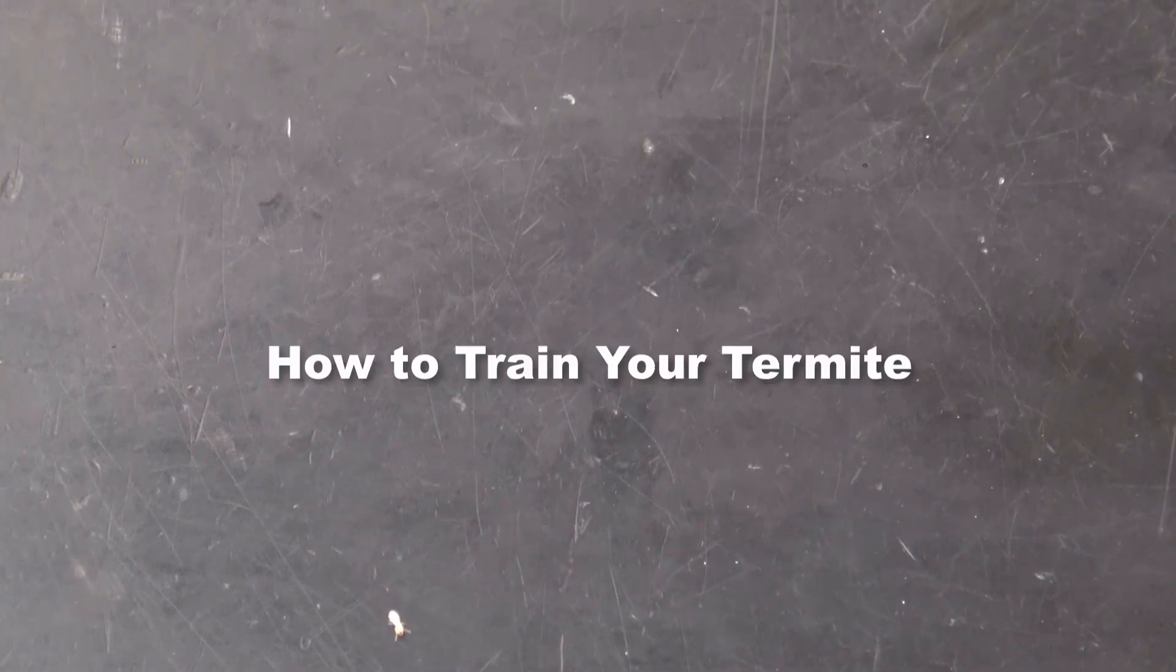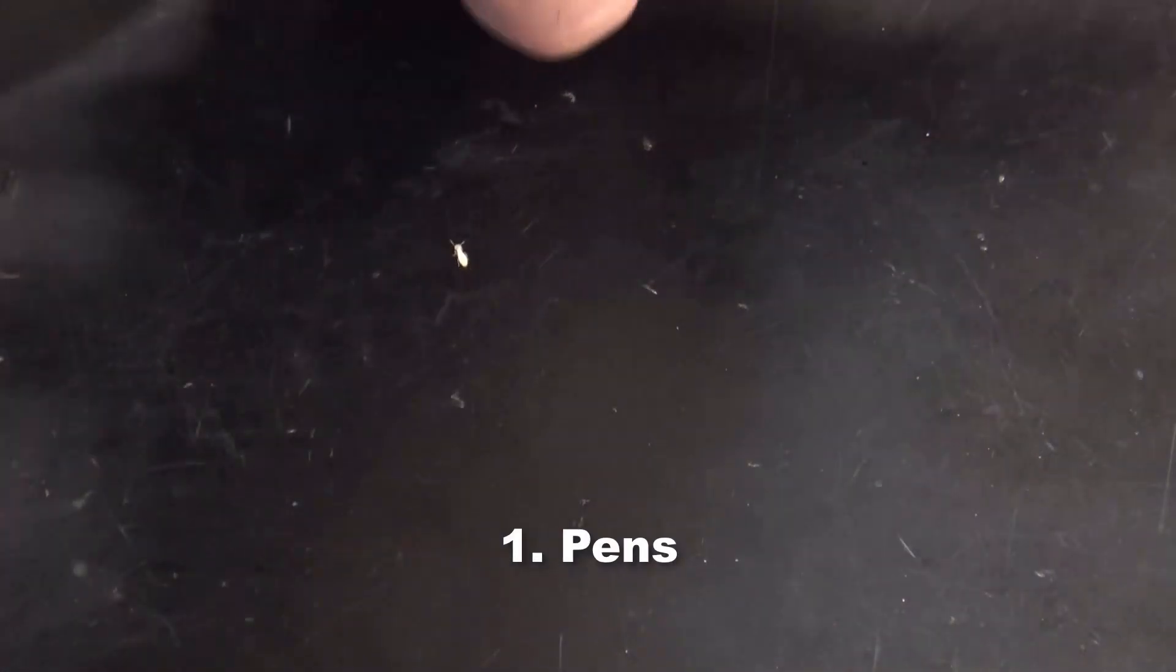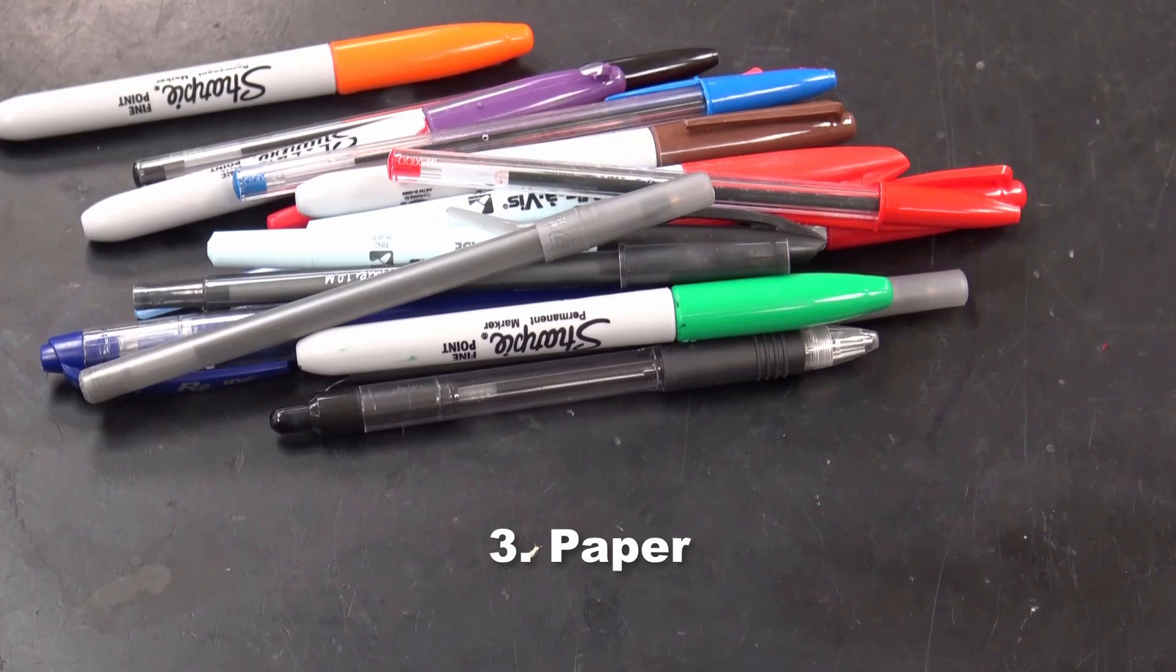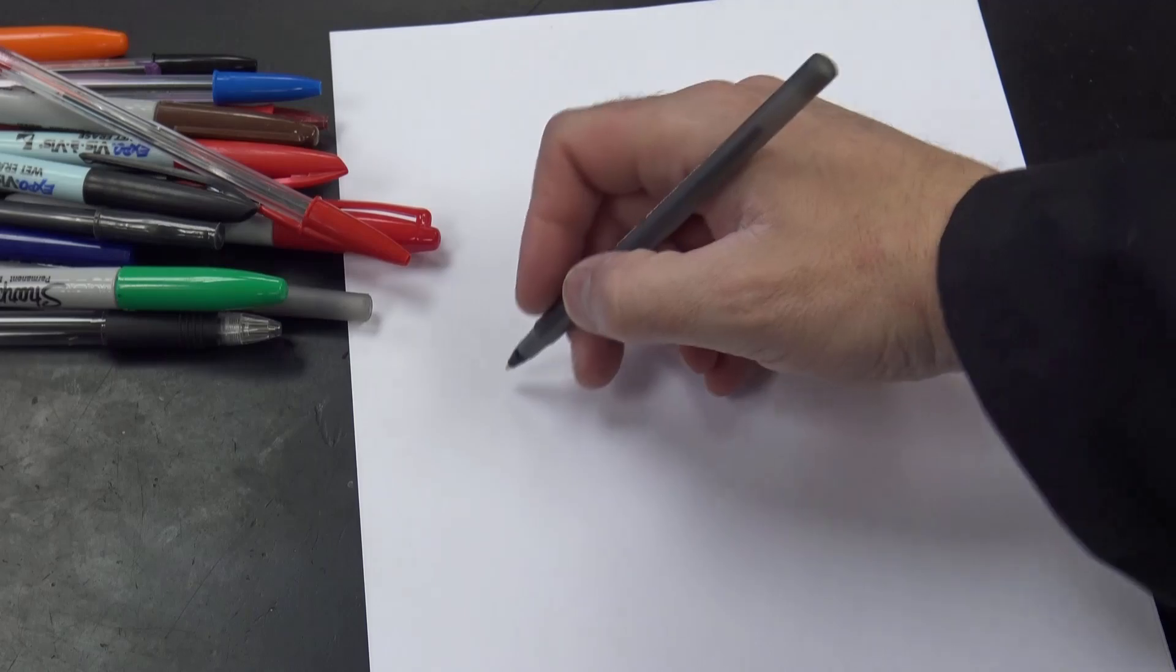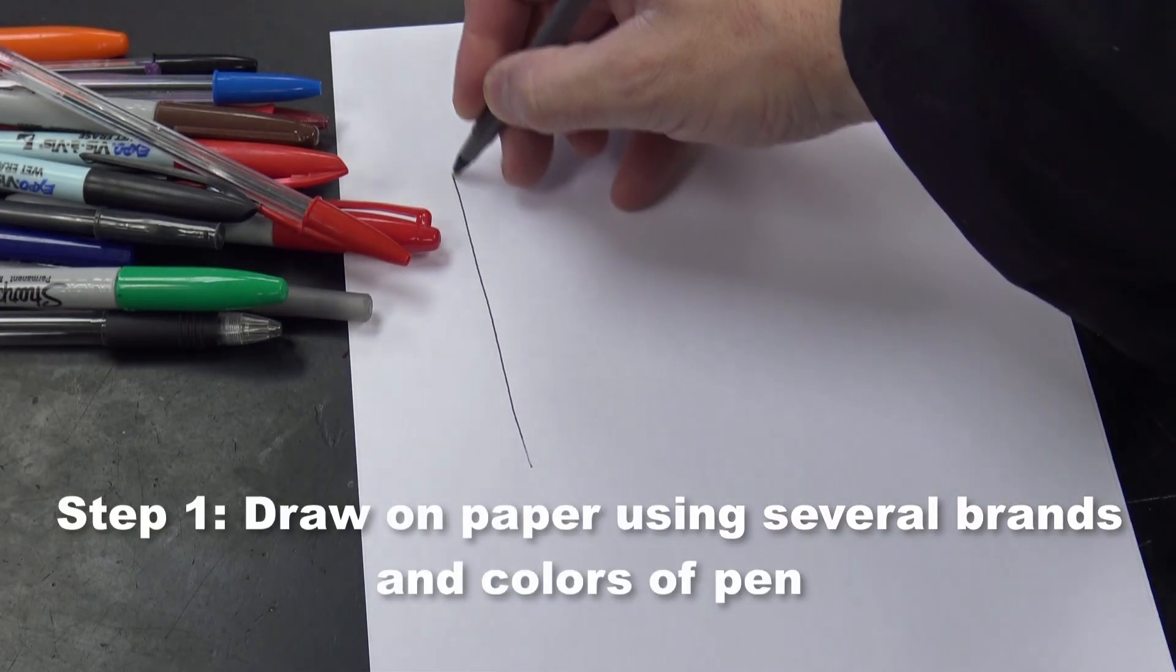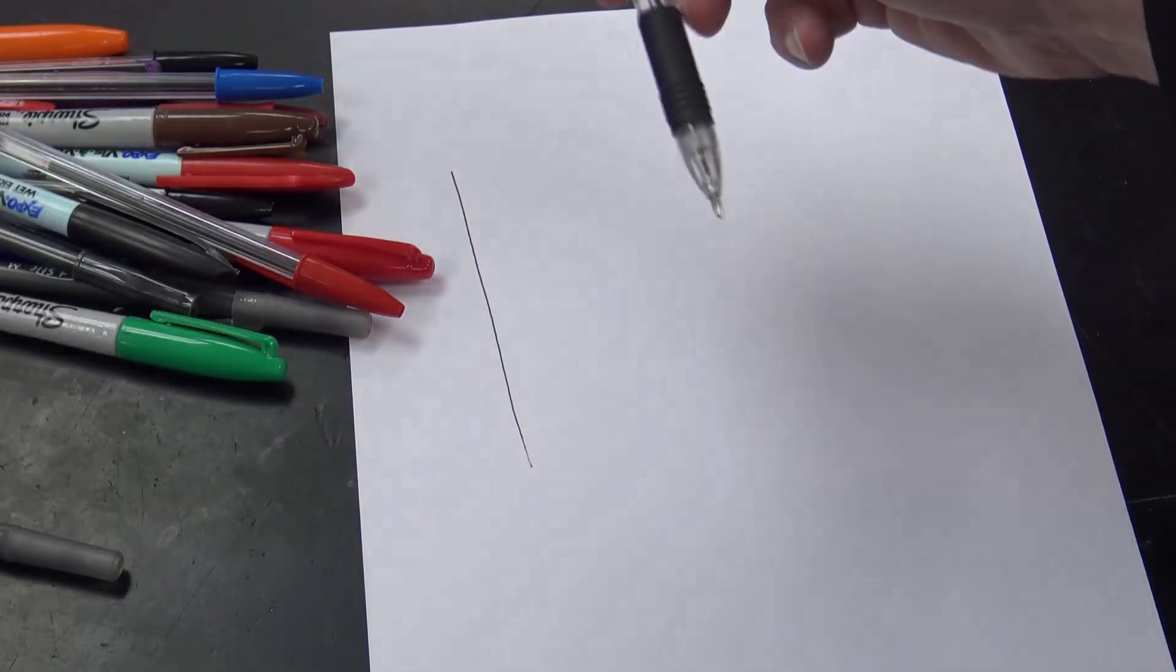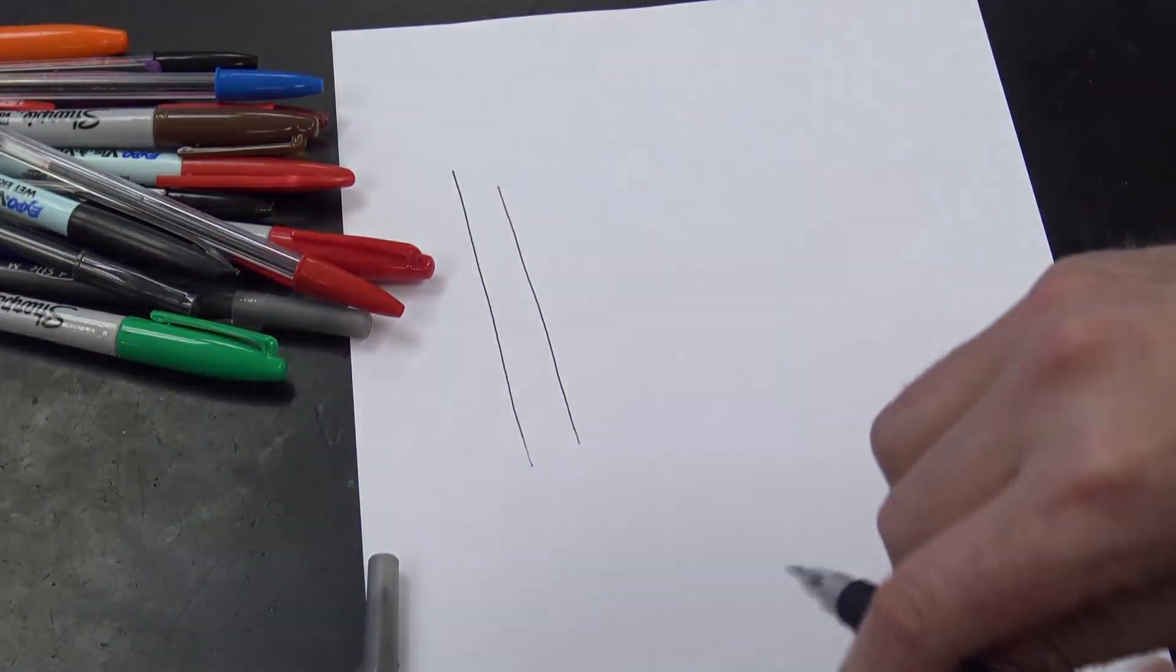Now let's get to the training phase. To train your termites, all you need are some pens. This is a good exercise in the scientific method. I've got a whole pile of different pens here, but we don't really know which pens are going to work or what the termites are going to do. So I'm drawing some lines with various pens on white paper.